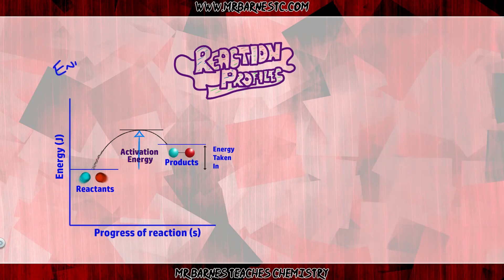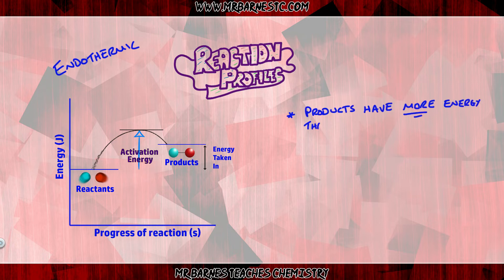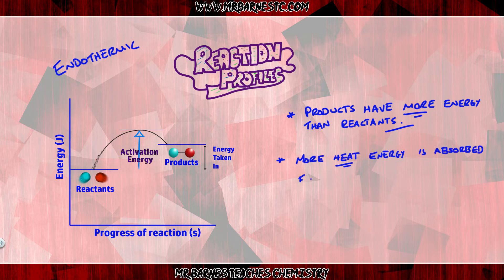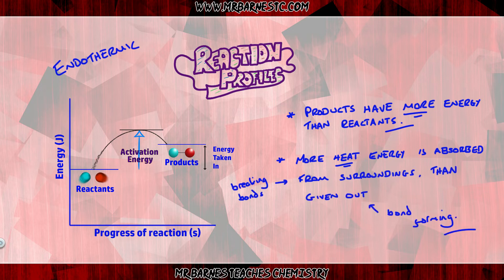If you want to draw an endothermic reaction profile, make sure the products are on the right and they have more energy than the reactants — in other words, the line is higher. The explanation is that more heat energy is absorbed or taken in from the surroundings when bonds are broken than given out when new bonds are formed.